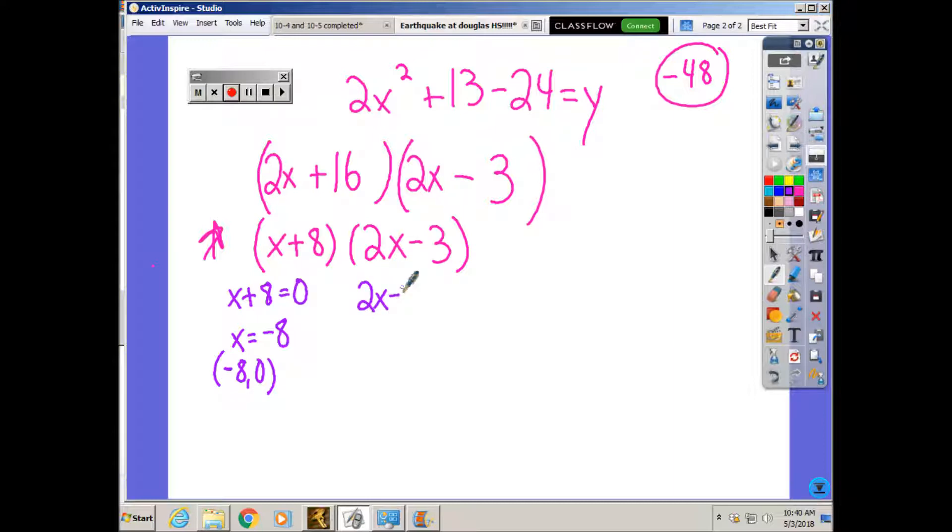2x minus 3 equals 0. I add 3 to both sides. I get 2x equals 3. I divide both sides by 2. I get 3 over 2 or 1.5. 3 divided by 2 is 1.5. And that's 1.5 comma 0.